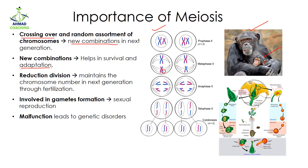New combinations help in survival and adaptation. If some properties through recombination have been transferred to the next generation, allowing that generation to survive in a particular environment, then that new combination is going to help in the survival and adaptation to that particular environment.